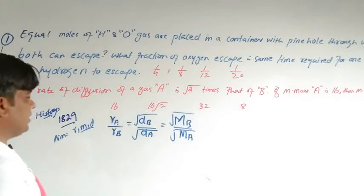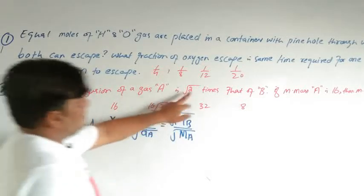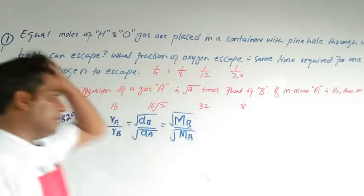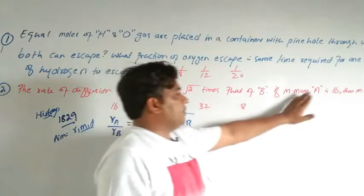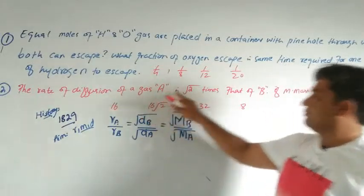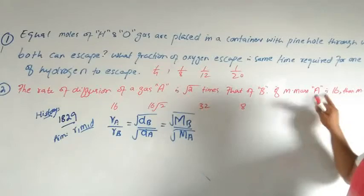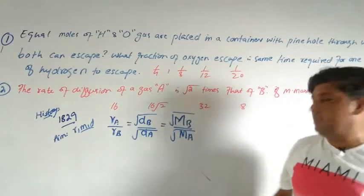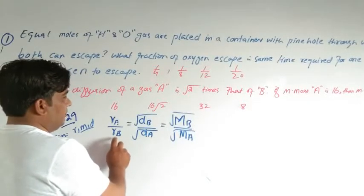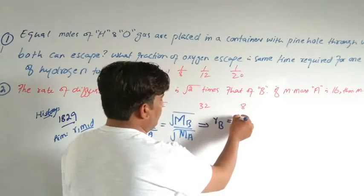For example, an MCQ says: the rate of diffusion of gas A is √2 times that of B, and the molar mass of A is 16 — find the molar mass of B. Since the rate of A with respect to B is given, B gets '1' in the denominator. We need to find the molar mass of B.